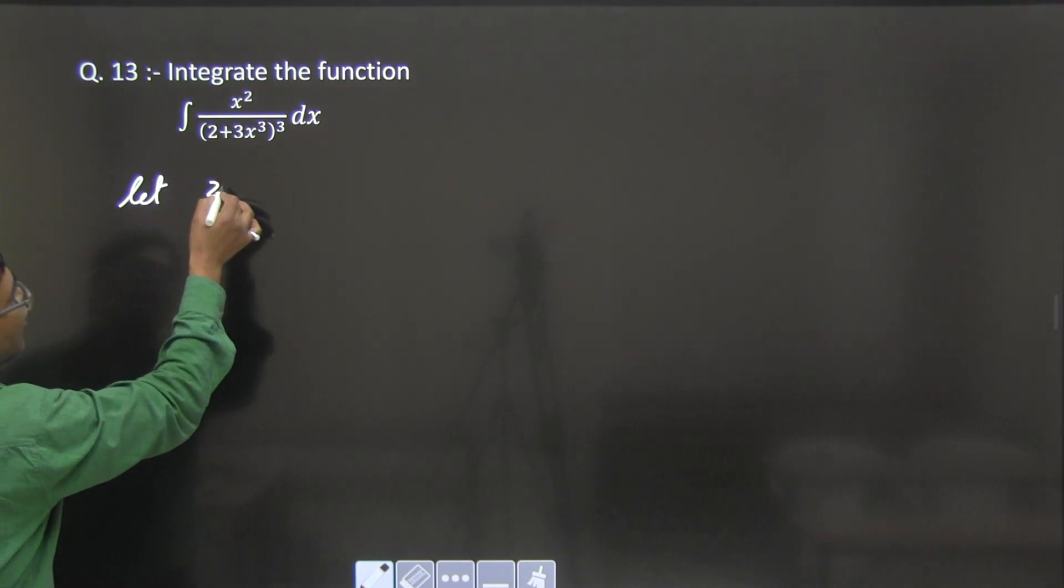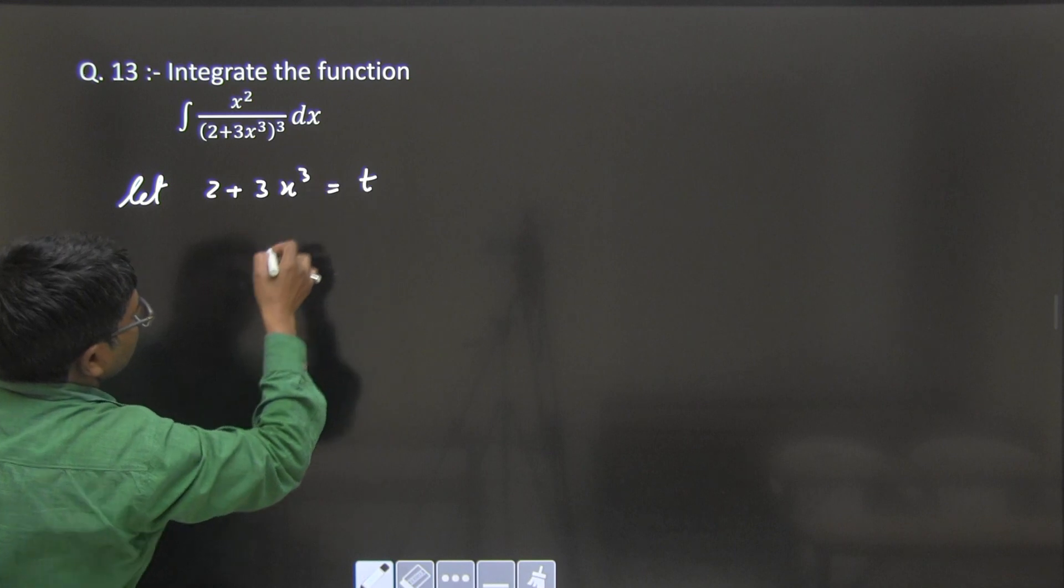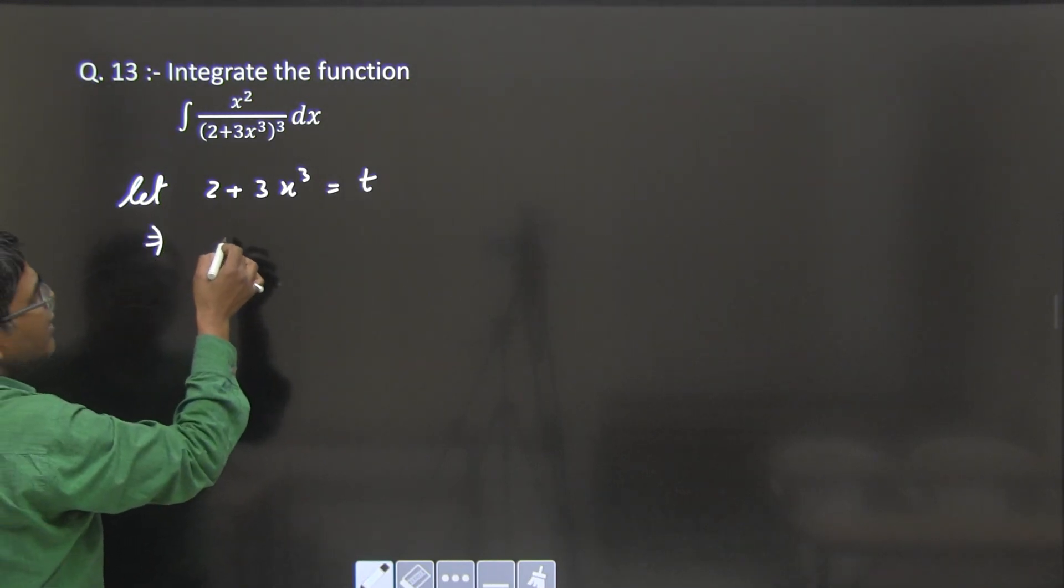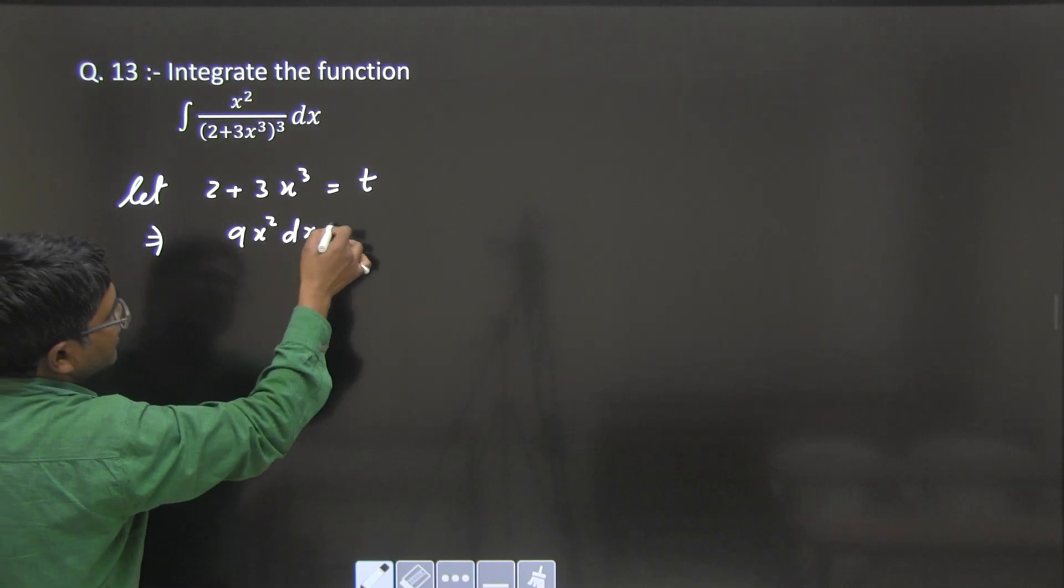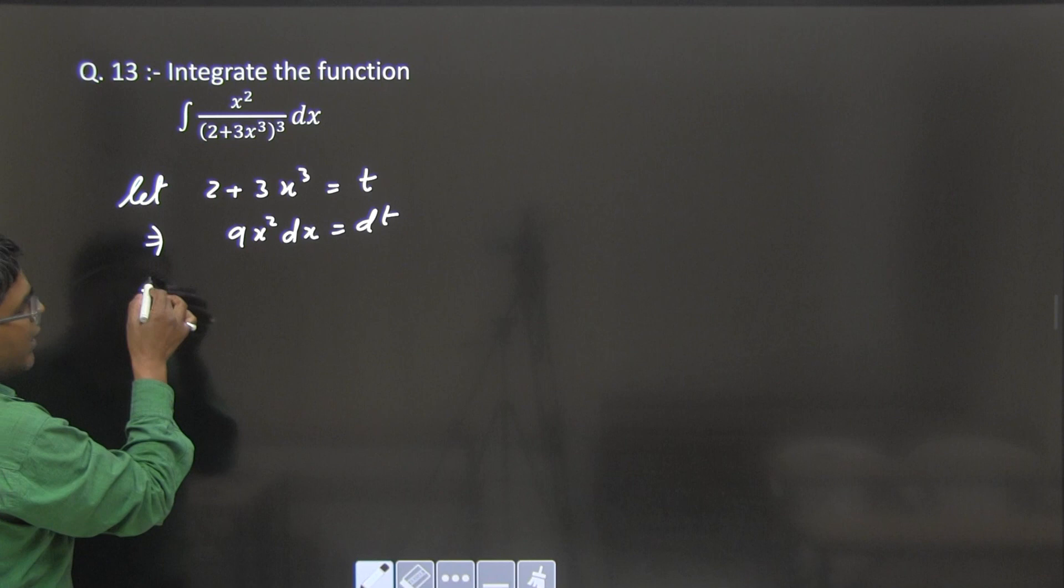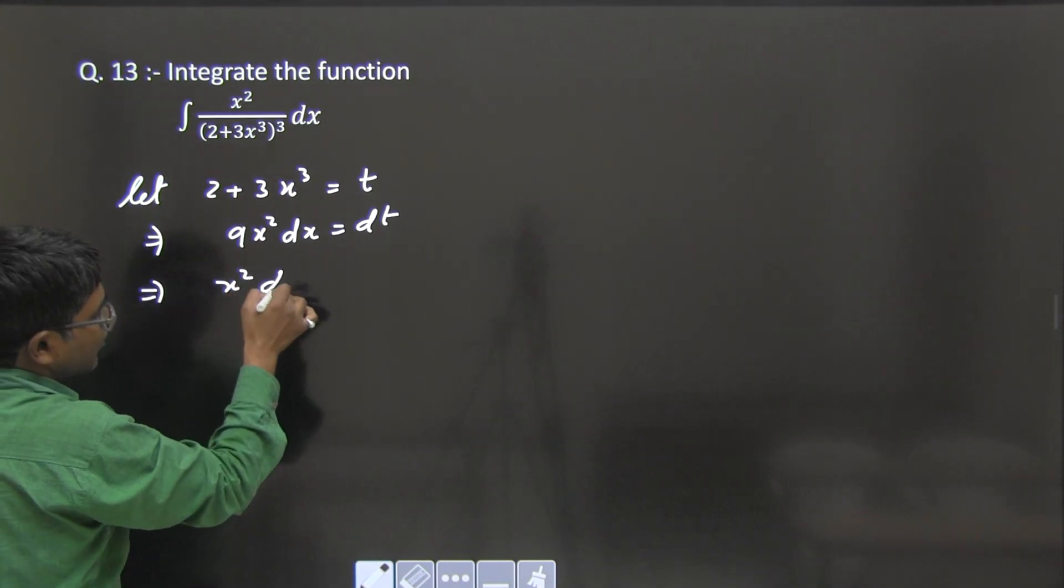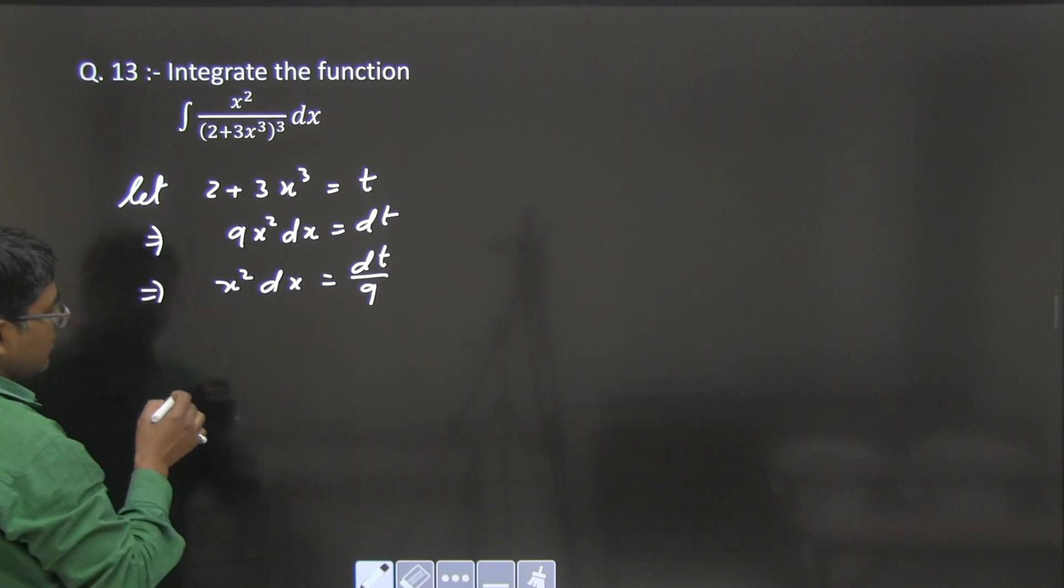let 2 + 3x³ = t. So from here we can write 9x²dx = dt. From here we can write x²dx = dt/9.